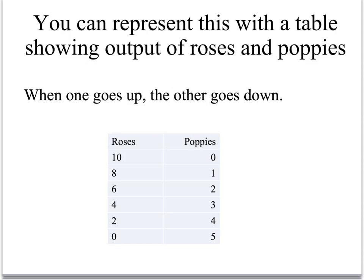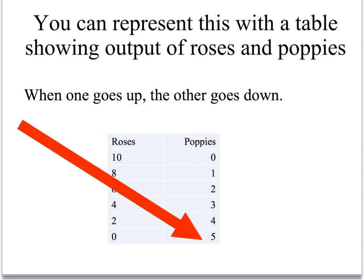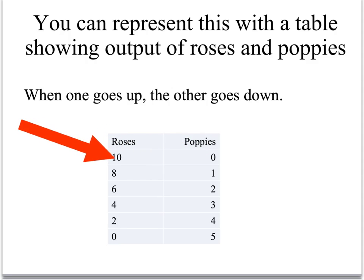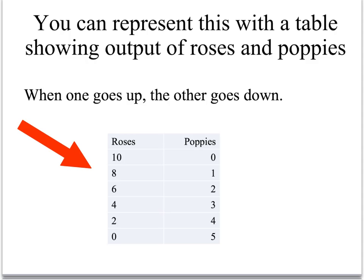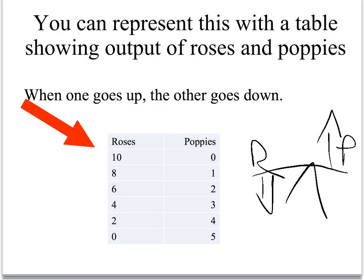You can represent your production in terms of numbers of roses and poppies. You can grow zero poppies, one, two, three, four, five. For each quantity of poppies, you will grow different quantities of roses. Notice what happens: more poppies, fewer roses. It's like a seesaw — the more you grow of poppies, the fewer roses.